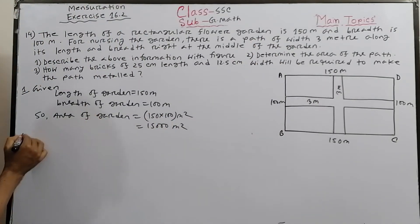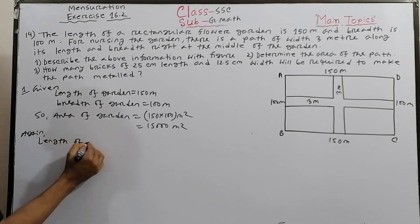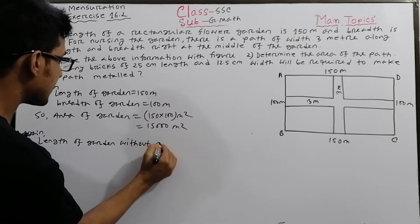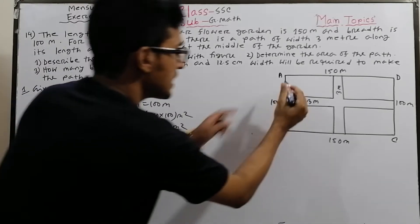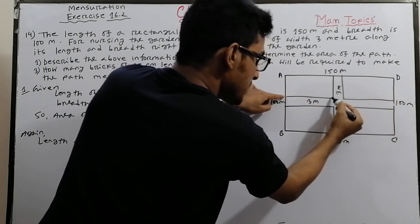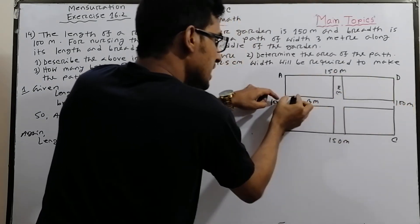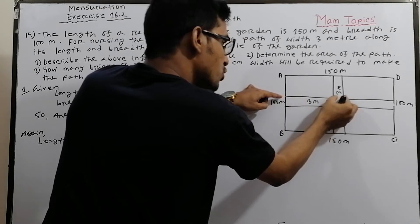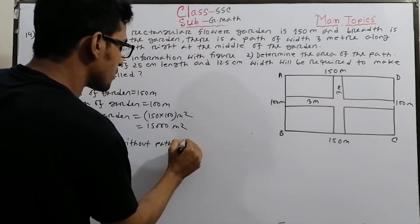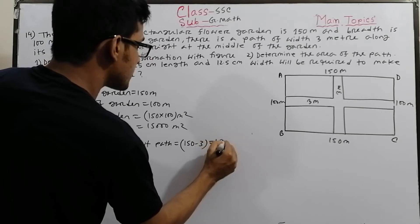Now, length of garden without path. The path runs through the middle, so there is one road of width 3 meters. Therefore, length without path equals 150 minus 3 equals 147 meters.